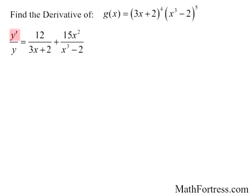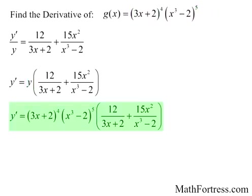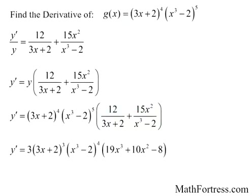The third and final step is to solve for y prime. We multiply both sides by y. Since we want the derivative in terms of x only, we substitute y with the original function. The final derivative equals the quantity 3x plus 2 raised to the 4th times the quantity x cubed minus 2 raised to the 5th, times the quantity 12 over 3x plus 2 plus 15x squared over x cubed minus 2. You can simplify further by finding a common denominator, though the first form is sufficient.